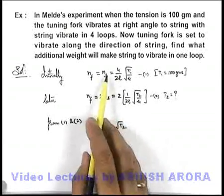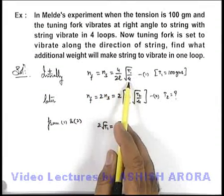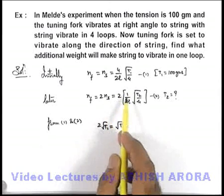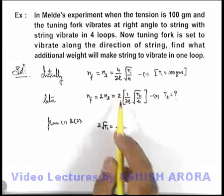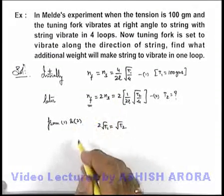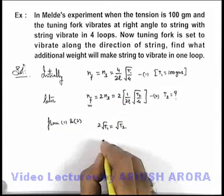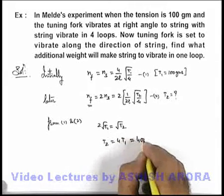Because frequency of string is given as 4/(2L)√(T1/μ), and here frequency of string is 1/(2L)√(T2/μ). So in this situation, if we further analyze, because frequency of tuning fork remains same, we'll get the value of T2 as 4T1, which is 400 grams.